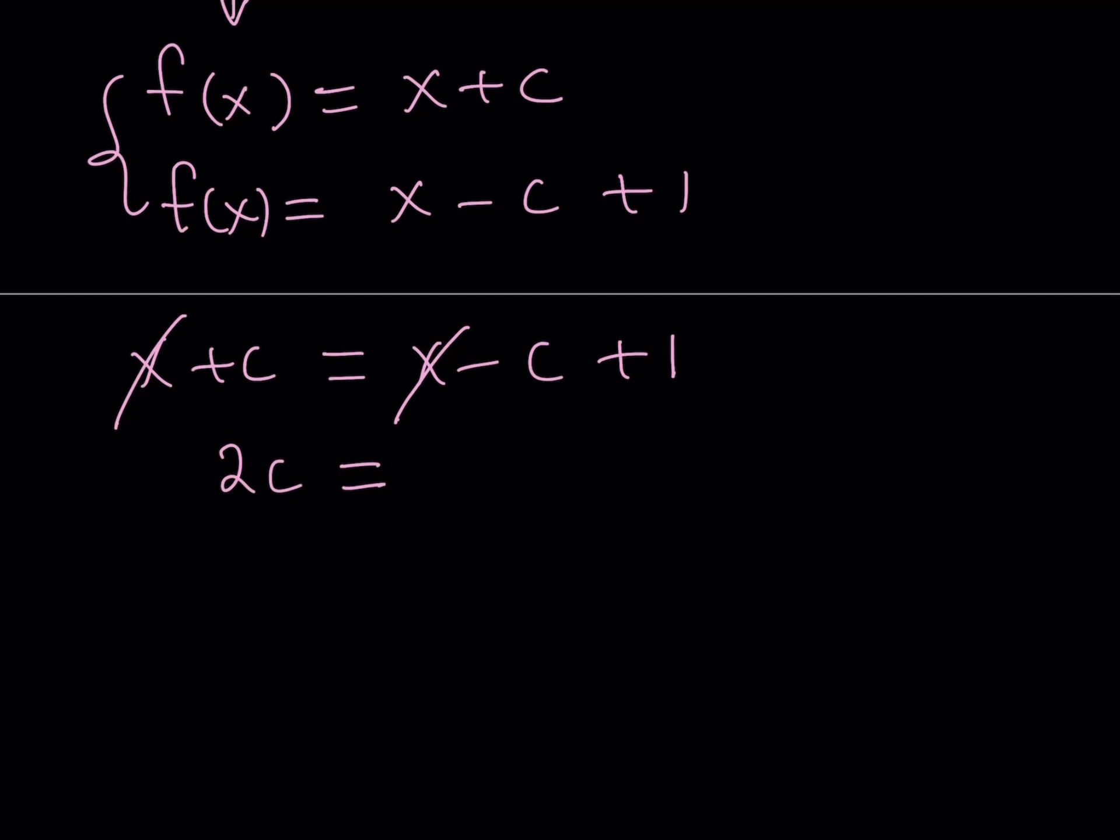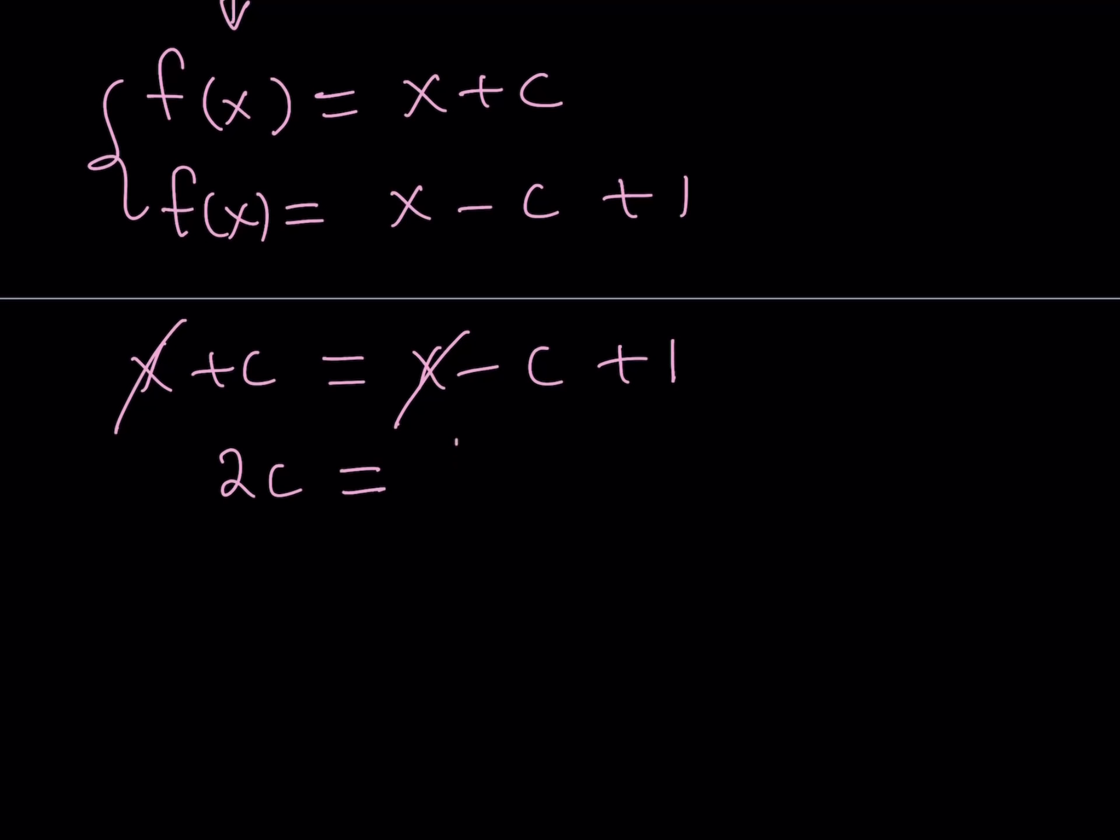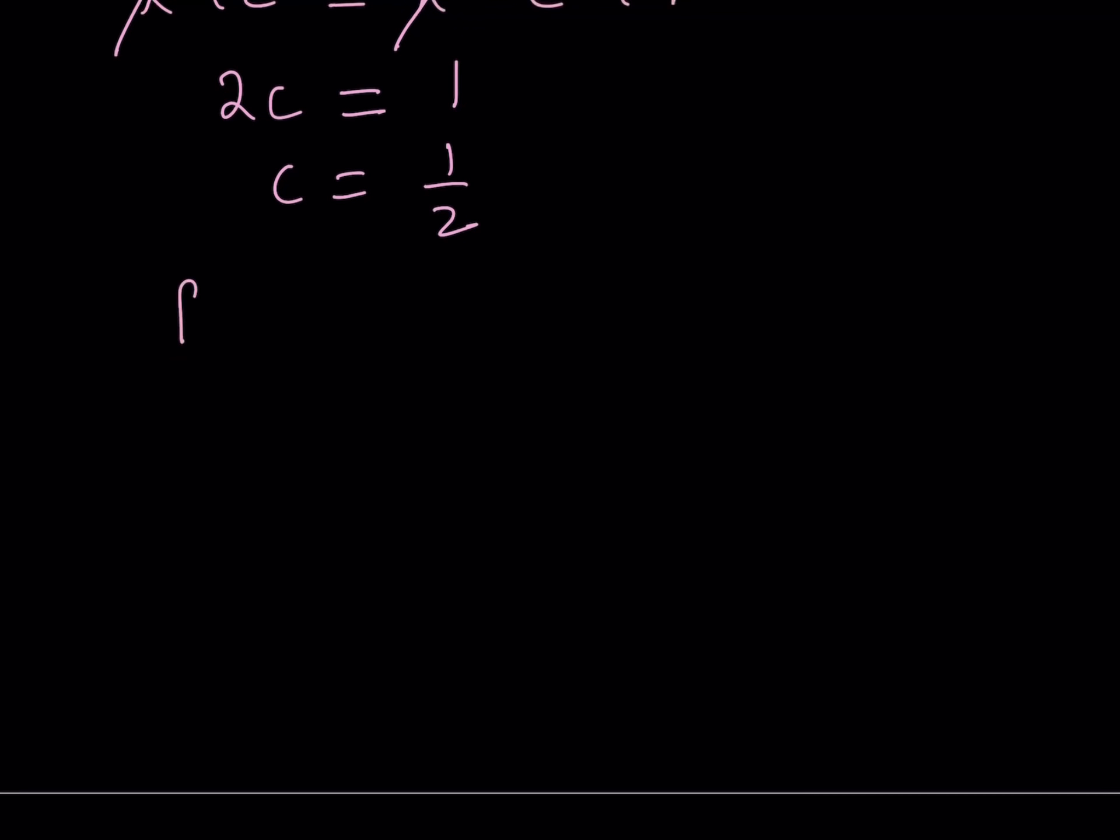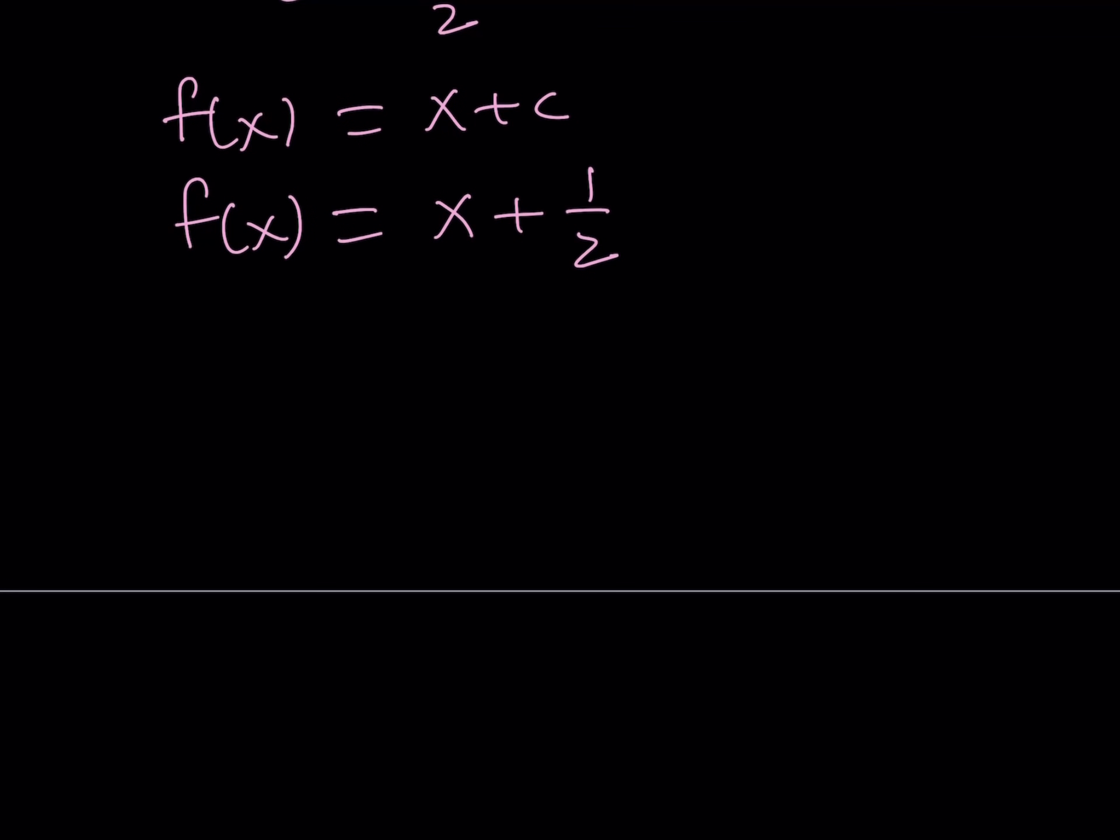Cross out the x values and you get 2c. Oh man, I should have used b so I can say 2b. But anyways, 2c equals 1. And from here, you get c equals 1 half. Which is kind of nice because you've got two expressions for f of x and they're equivalent. So it doesn't matter which one. I'm going to use the top one since f of x can be written as x plus c. And now we know that c is equal to 1 half. I can basically write f of x as x plus 1 half. So this will be the solution to our equation.